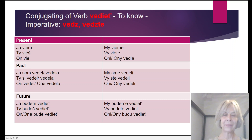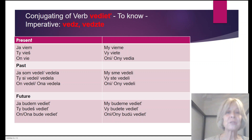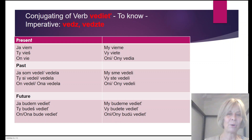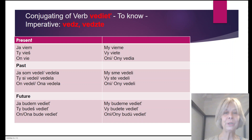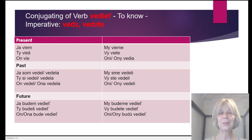Future negative: Ja ne budem vedieť. Ty ne budeš vedieť. On/ona ne bude vedieť. My sme vedeli. Vy ne budete vedieť. Oni ne budu vedieť.